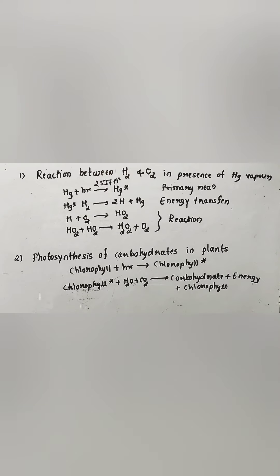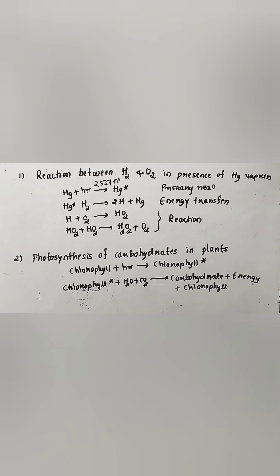Another example of a photosensitized reaction is the photosynthesis of carbohydrates in plants. In photosynthesis, chlorophyll acts as the photosensitizer. It initially absorbs radiation and gets excited to a higher energy level, then transfers its energy to water and carbon dioxide molecules, leading to the formation of carbohydrates. Energy is released and the chlorophyll molecules return to the ground state.